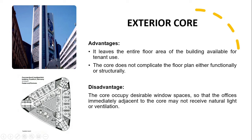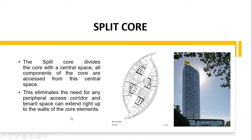An example building has three cores going straight up. For the split core, we divide the core into two parts along a central space. All the components on each side of the core are accessed through this central space. This is shown in the floor plan and in the 3D view. By providing this central space, we eliminate the need for any peripheral access corridor, so the tenant space can extend right up to the walls of the core elements.